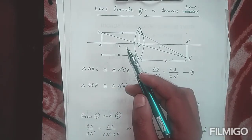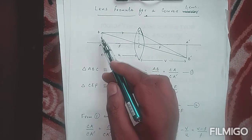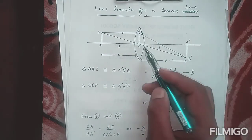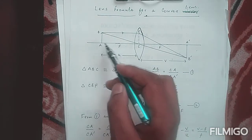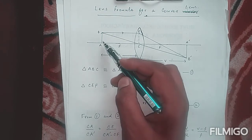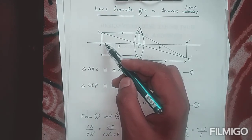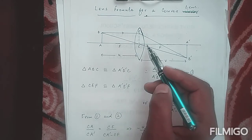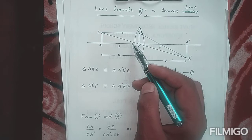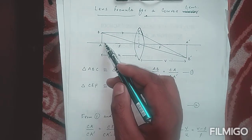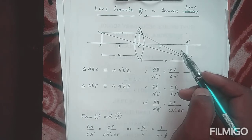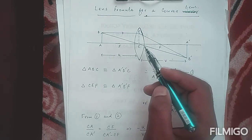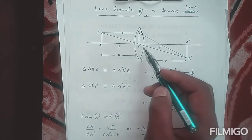Now, if we take triangle ABC, this triangle is similar to triangle A prime B prime C. Why? Because angle A is equal to 90 degrees, and angle A prime is equal to 90 degrees. Also, angle C here equals angle C there, as both are vertically opposite angles. Since two angles of these two triangles are equal, the third angle must also be equal. That is why triangle ABC is similar to triangle A prime B prime C.